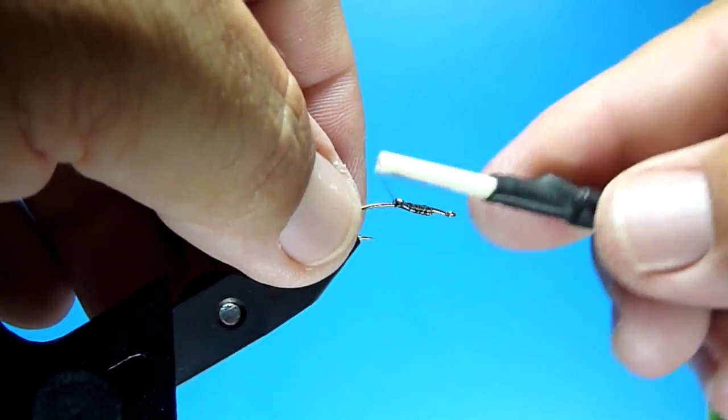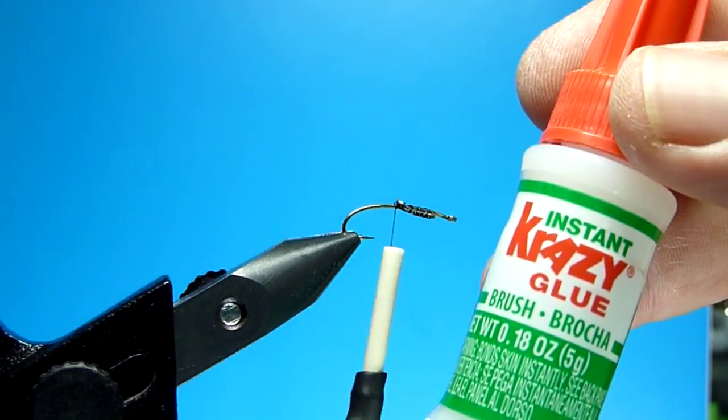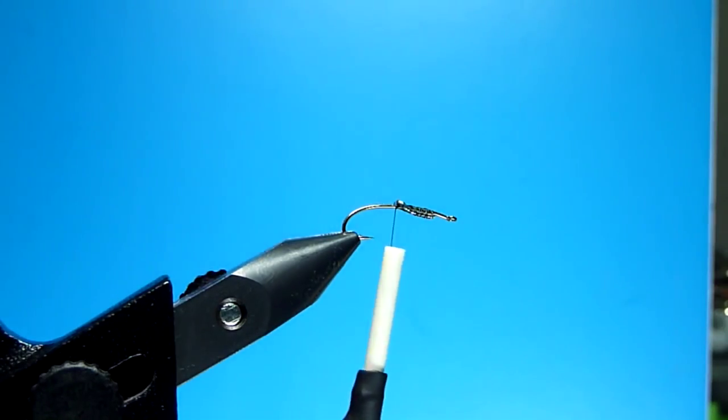Get it smashed down as much as you can, give it some good wraps, stop the thread behind it. Grab your super glue and throw a little dab of super glue on there, that will keep it from rotating once you get the fly in place. Don't need a lot here, just a little dab.